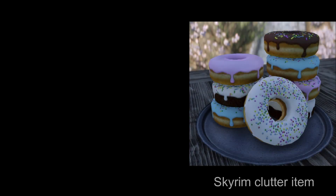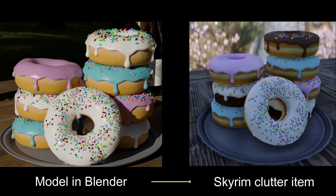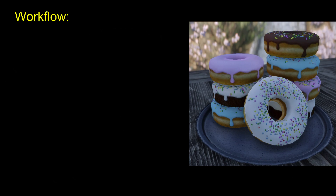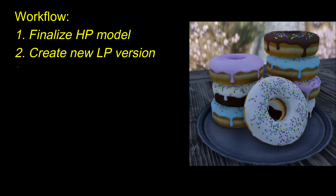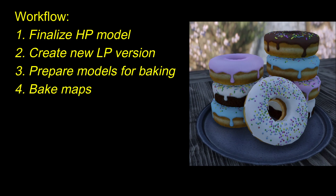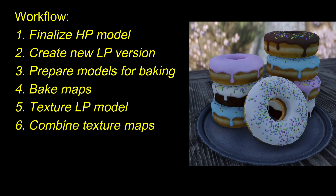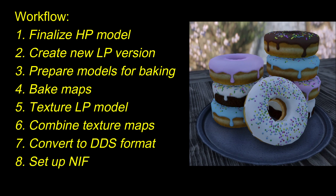What is this Skyrim Donut series all about? The goal is to provide a detailed walkthrough of the entire process for taking a model made in Blender and getting it into the game. This requires a lot of different steps and a lot of different programs. The general process looks like this: first, you optimize your current high-poly model, then you create a new low-poly version, you prepare the models for baking, bake your initial texture maps, then you texture the low-poly model and export the new maps, combine those texture maps, convert them into the appropriate DDS formats, set up your NIF, and lastly, add the completed model to the game.